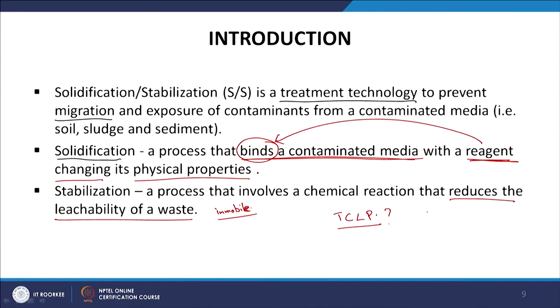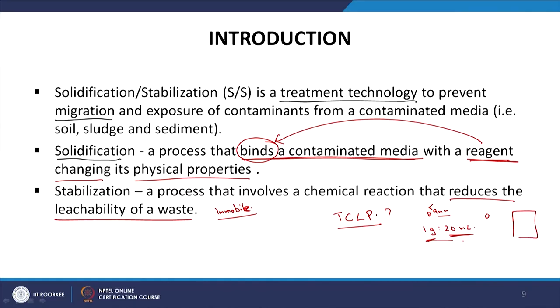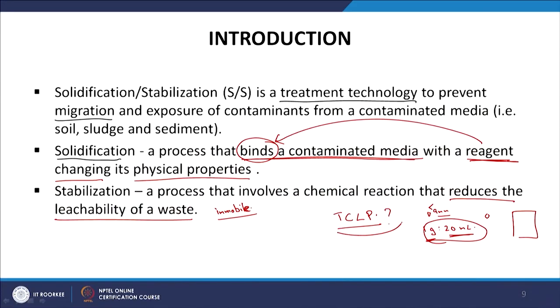In the TCLP procedure, you break down the relevant mixture to less than 9 mm particle size, take a 1 gram to 20 mL ratio of waste to acetic acid-based leaching solution, place them together in that ratio, and carry out end-over-end mixing for 24 hours. You then test the concentration of relevant compounds in the leachate. If the concentration exceeds the prescribed limits, that particular waste is classified as hazardous waste.